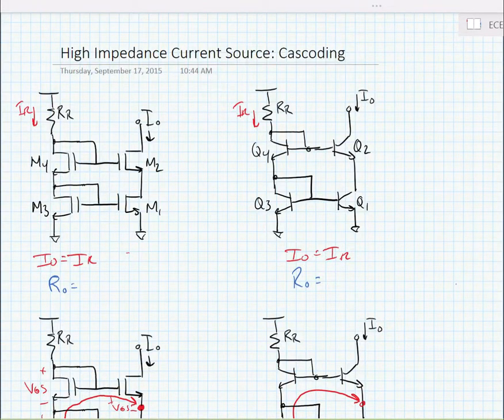Okay, so we know that we want our current sources to have high impedance, and in this video we're going to look at a way to increase the impedance of a current source, namely by cascoding the current source.